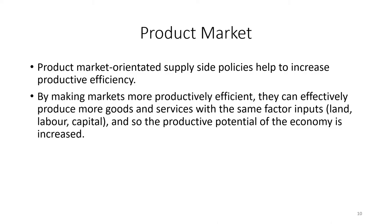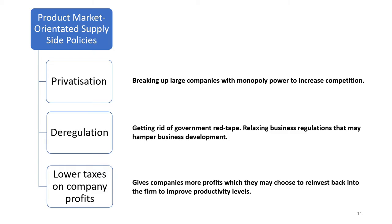Lastly, the product market — all about production and productive efficiency. By making markets and firms more productively efficient, they can effectively produce more goods and services with the same factor inputs: land, labour, capital. So the productive potential of the economy is increased without having to increase the quantities of factors of production available. One example of a product-market-orientated supply side policy is privatisation — the sale of public sector assets and companies to the private sector. This was the major supply side policy on the product market side in the 1980s.